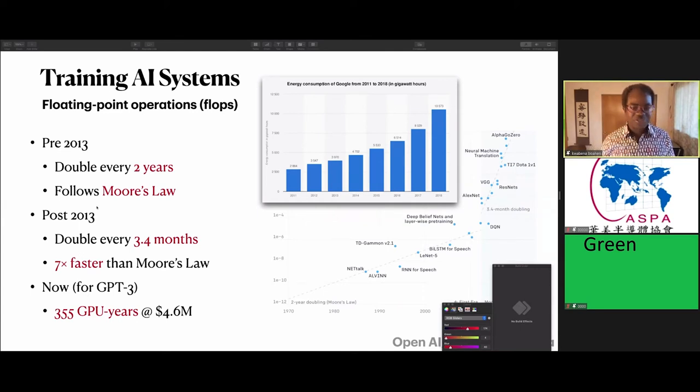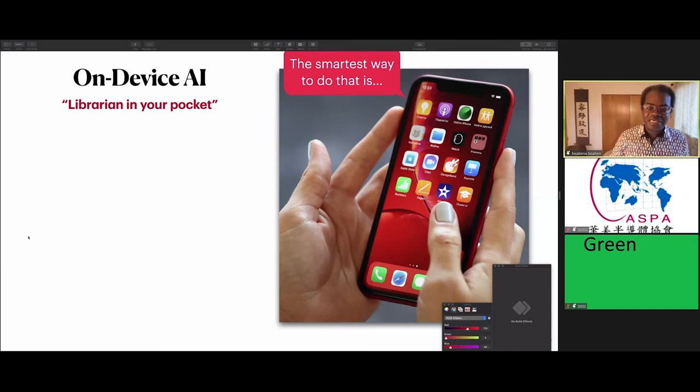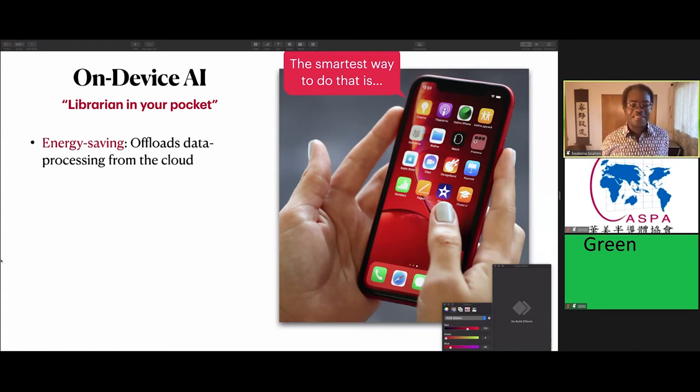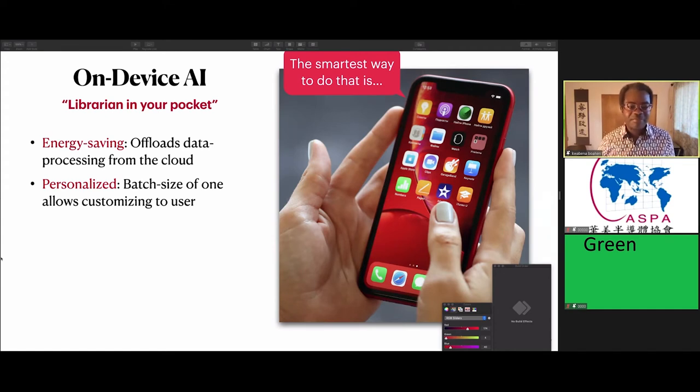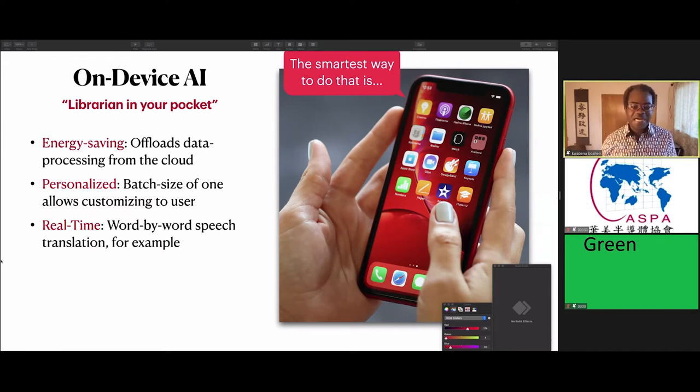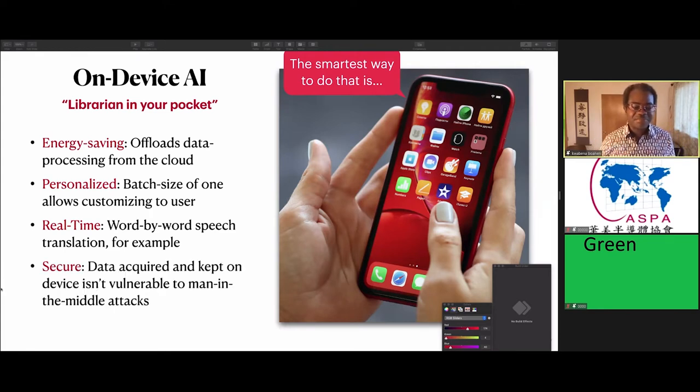I'm going to talk about a different approach. This will take longer to pan out, but it has a lot of potential. Can we actually migrate these services from the cloud to our pockets? This is on-device AI, what I like to call librarian in your pocket. We could be running GPT-3 on your phone. You could be having an intelligent conversation with it about how to solve the problem you're working on. This offers numerous advantages. You're going to save energy by offloading the data processing from the cloud. You can be personalized because you have a batch size of one, which is just the one user. You can do this in real-time because you cut out the latency of going back and forth to the cloud. You can be more secure because the data can't be intercepted. It's no longer transmitted. It's kept on the device.